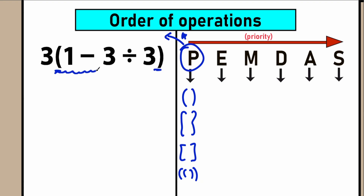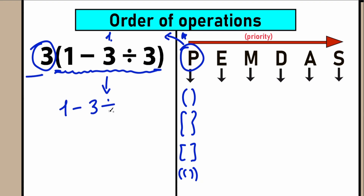We should first evaluate the expression inside the parentheses. Scanning our question, we have three in front of the parentheses, so we need to evaluate the expression inside and then multiply it by three. Inside the parentheses we have 1 minus 3 divided by 3. Let's scan what we have in this expression to evaluate it properly.